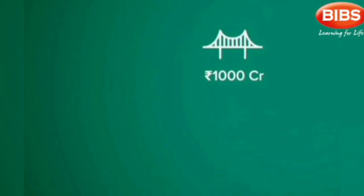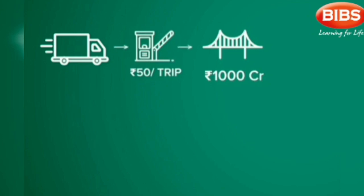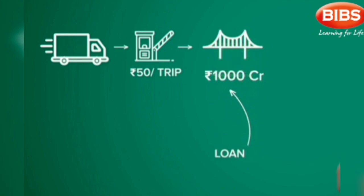Let's assume that we have an infrastructure company which constructs a bridge at the cost of a thousand crores. This bridge is rather crucial for the region and cuts down the travelling time for trucks by over 10 hours. For this service, the government allows the company to collect a toll of Rs 50 per trip from every truck that passes through. Now this thousand crores is the tough part, because it is difficult for many companies to put up such high sums of money, and probably that's why most companies end up borrowing this money, which adds a layer of unwanted complexities to the balance sheet.